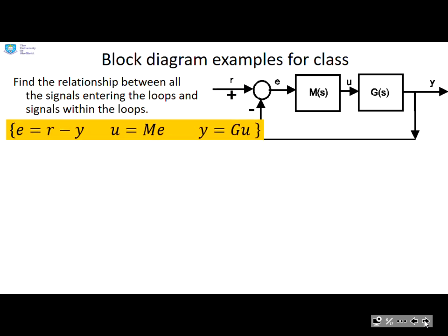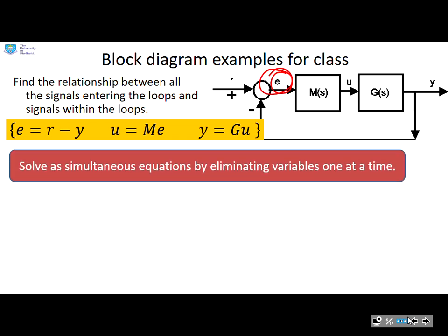Now this slide is almost the same, but the only difference is now we're going to try and solve for the signal e. But it's the same process. We have simultaneous equations and we just need to eliminate one variable at a time, but we're going to eliminate different variables.